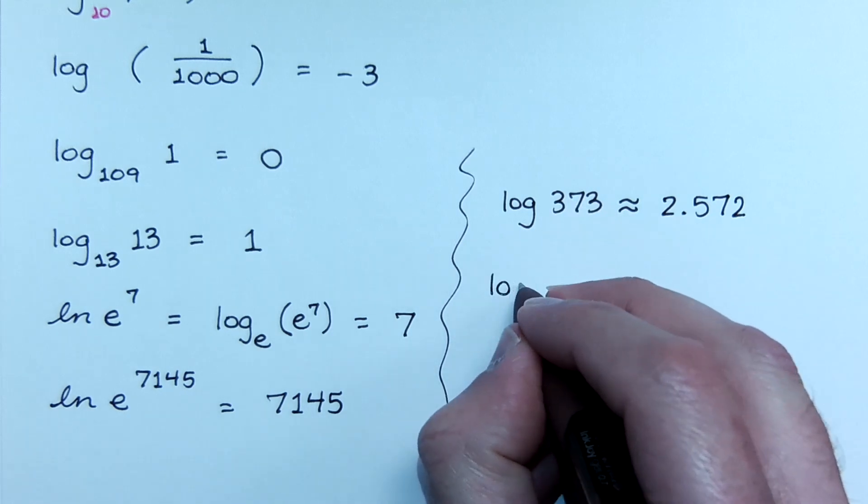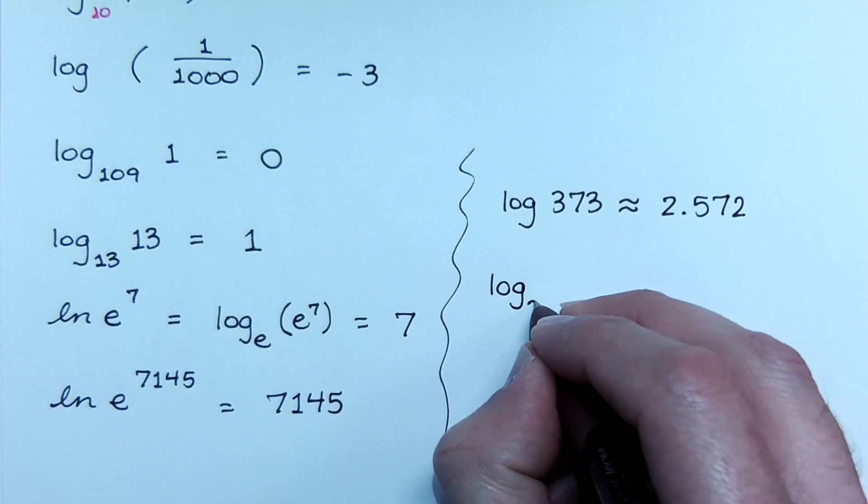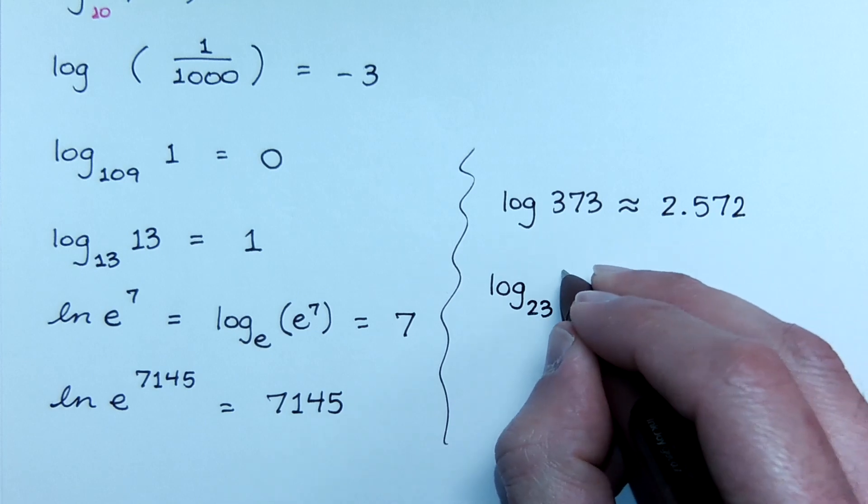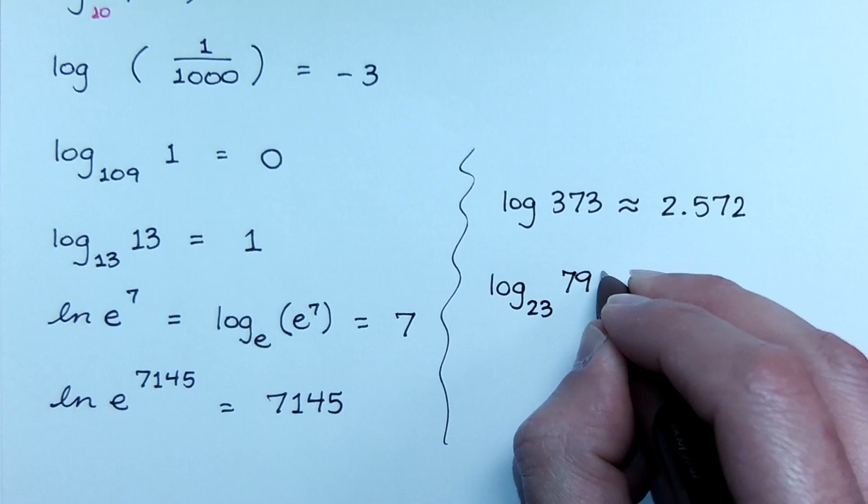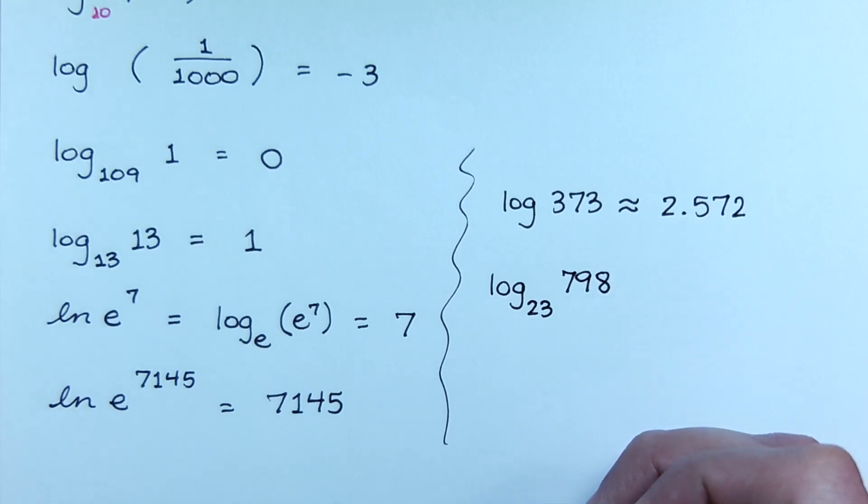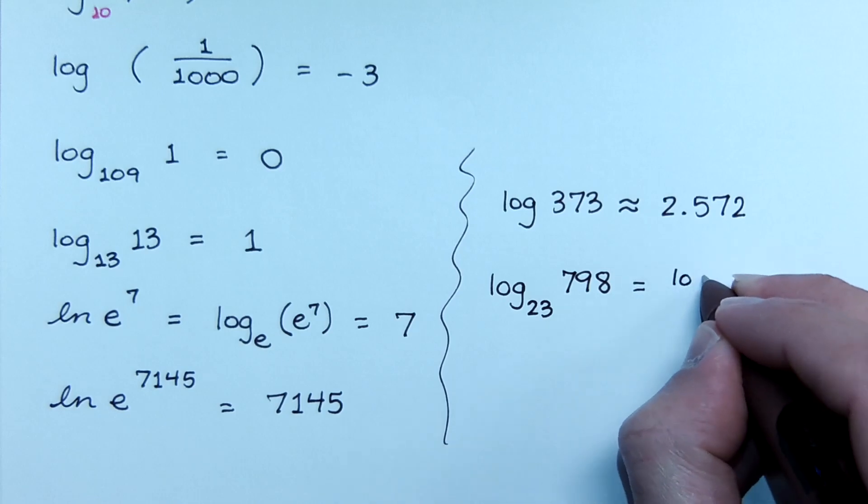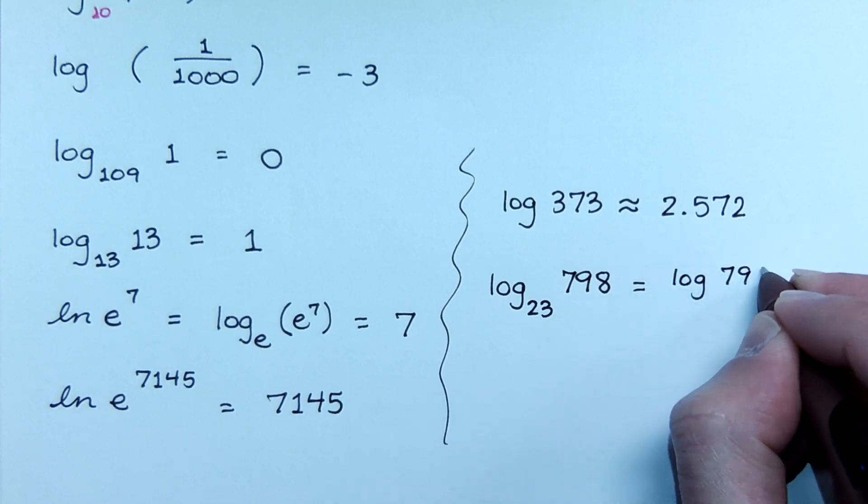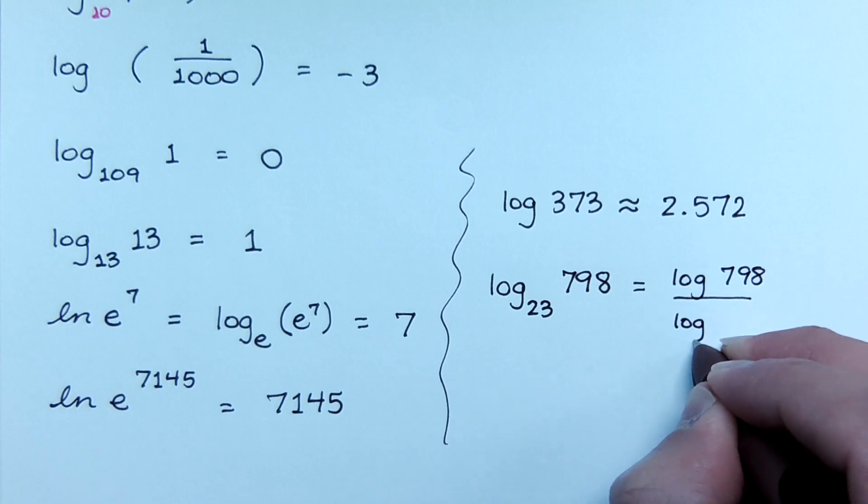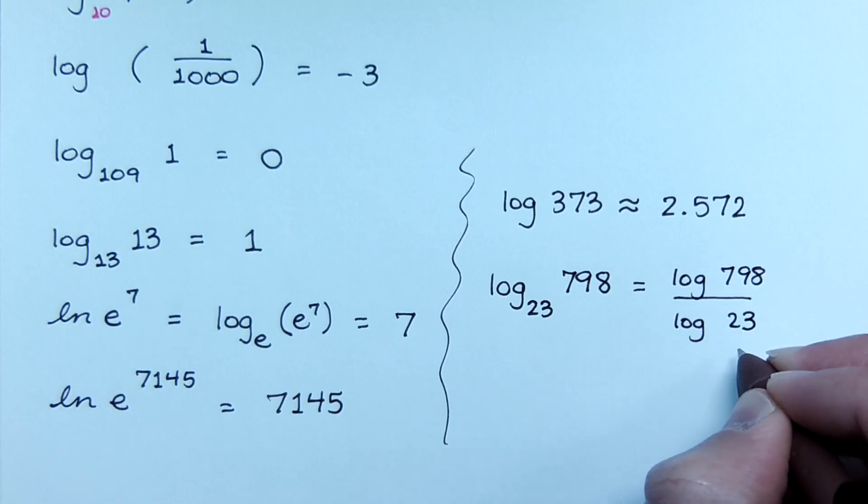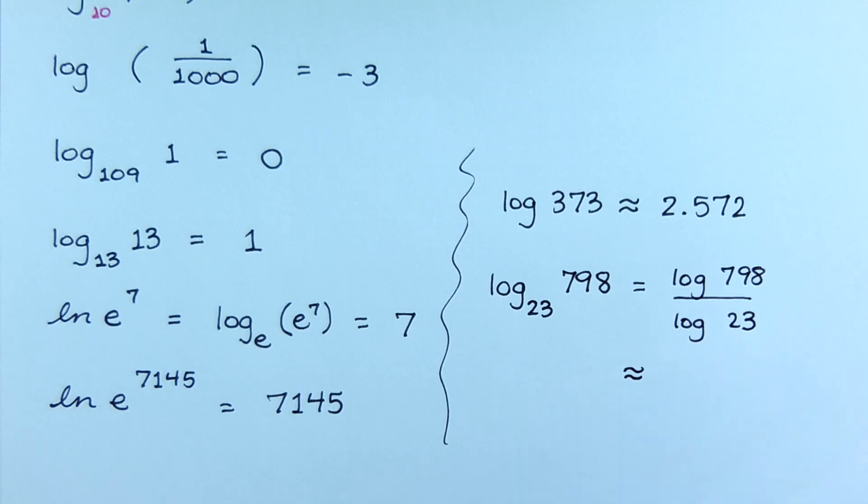And finally, if I say what's log base 23 of 798. So are you supposed to know your powers? Well, here's the thing. 23 to the first is 23. 23 squared is 529. 23 to the third is going to be bigger than that. Between 2 and 3. Right, so we can do log of 798 over the log of 23. You do the change of base.